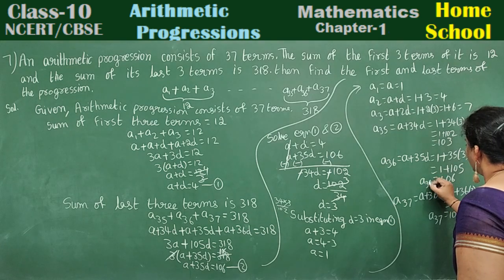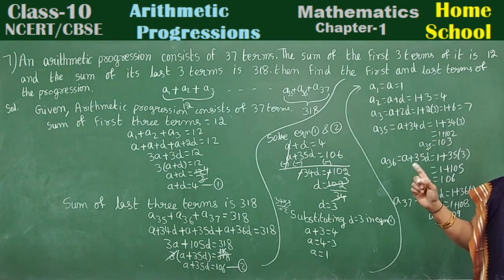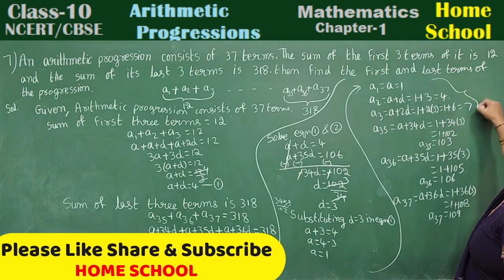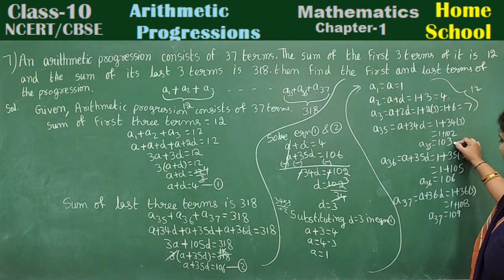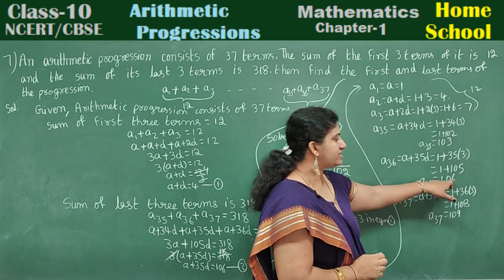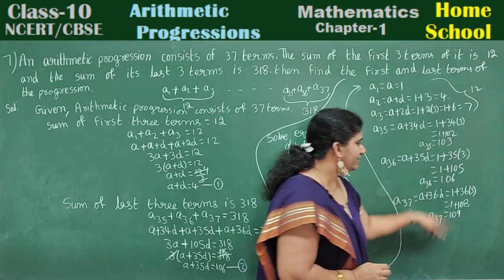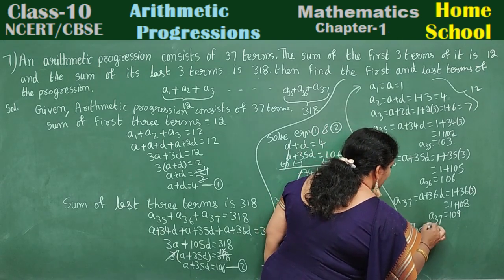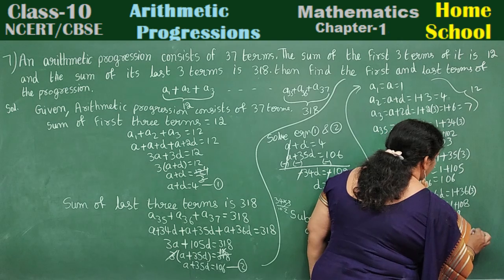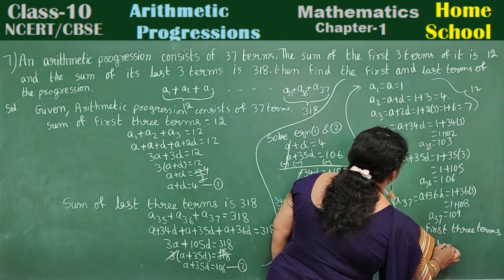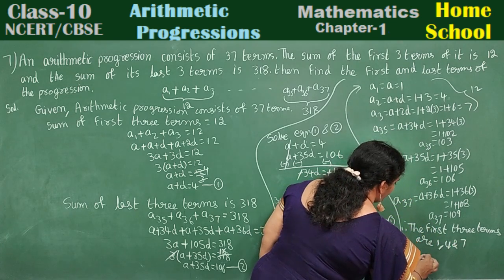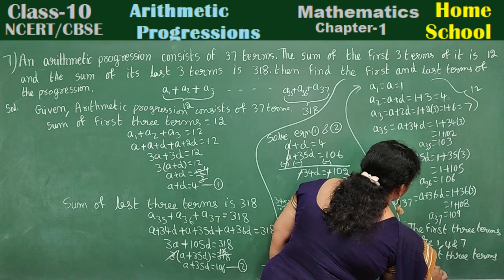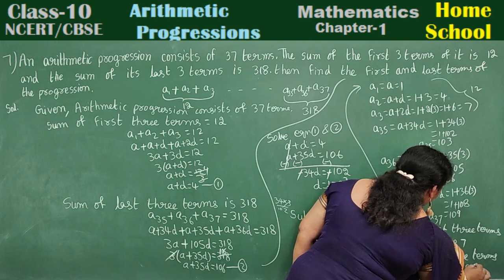Let's verify: the first three terms are 1, 4, and 7. Their sum is 1 plus 4 plus 5, then 5 plus 7 equals 12. Correct! The last three terms are 103, 106, and 109. Their sum is 103 plus 106 plus 109 equals 318. Correct! Therefore, the first three terms are 1, 4, and 7, and the last three terms are 103, 106, and 109.